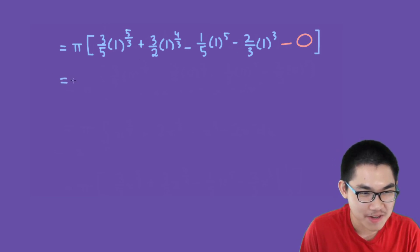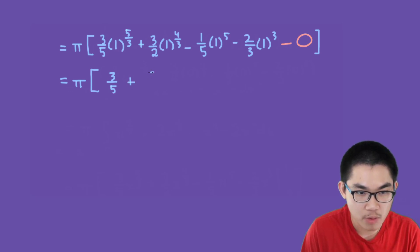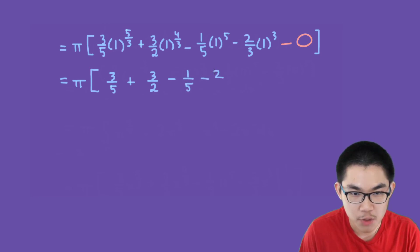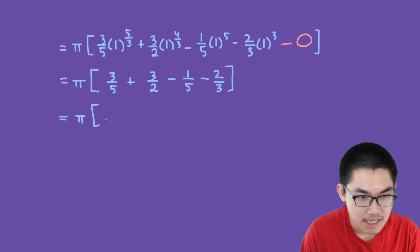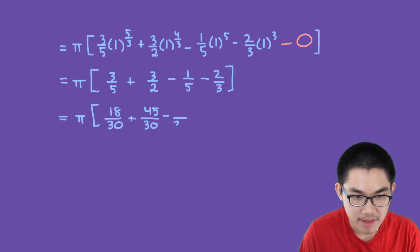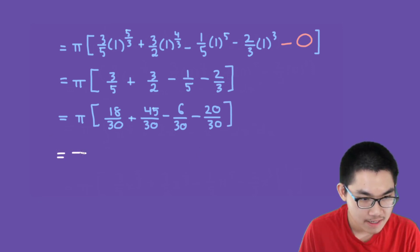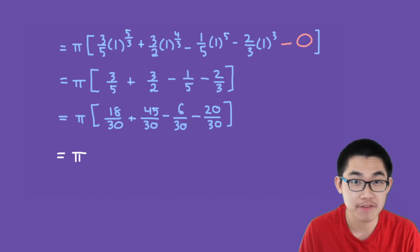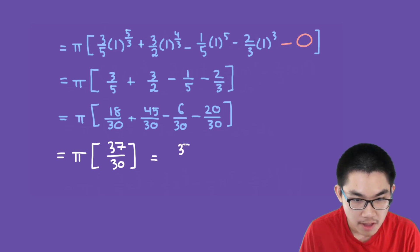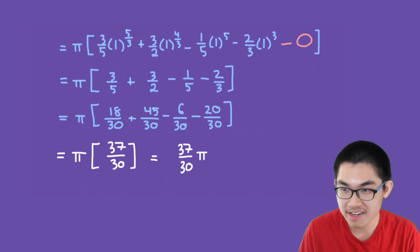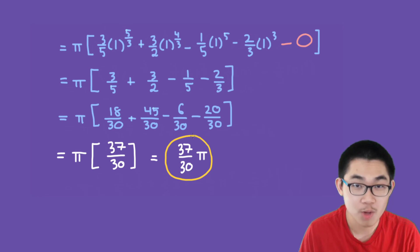We are so close to finishing. This is pi times 3/5 + 3/2 − 1/5 − 2/3. The common denominator is 30, so that's pi times (18 + 45 − 6 − 20) over 30. And 18 + 45 − 6 − 20 equals 37, so this is pi times 37/30. The final answer is 37π/30, which represents the volume of our three-dimensional solid.